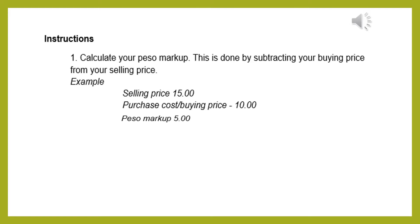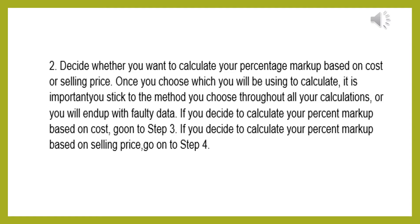Now, how are we going to calculate? First, calculate your peso markup. This is done by subtracting your buying price from your selling price. For example, your selling price is 15 pesos, and you bought the item for 10 pesos. Therefore, you will have a peso markup of 5 pesos. So 5 pesos ang tubo mo — you earned 5 pesos.